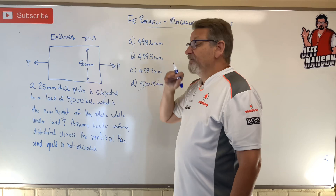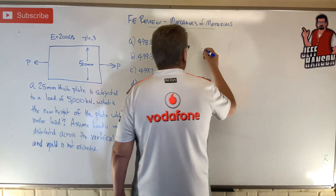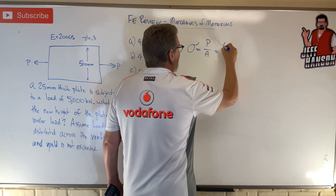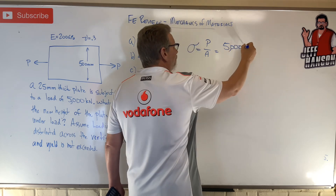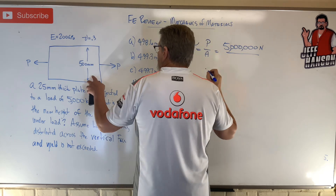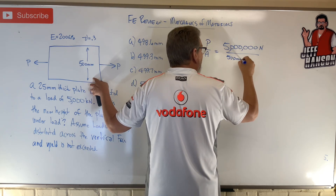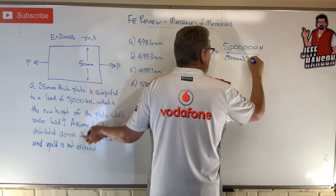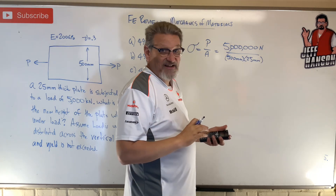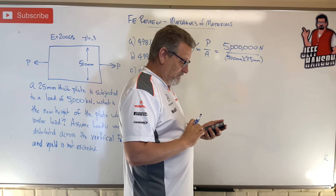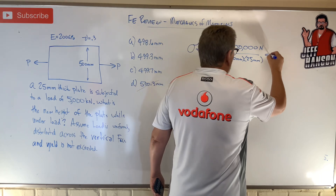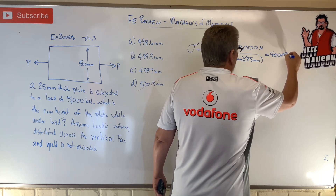I'm given a load and some information about the plate, so I'll calculate sigma, which is going to be P over A. That's 5,000 kilonewtons — converting to newtons, that's 5,000,000 — divided by the area, which is 500 by 25 millimeters. That gives us newtons over millimeters squared, which is megapascals. So that's 400 megapascals.